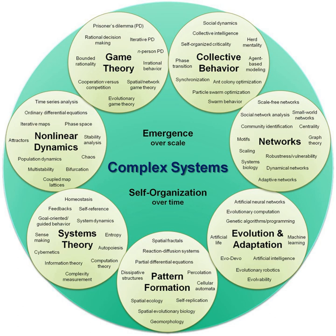Systems theory is the interdisciplinary study of systems. A system is a cohesive conglomeration of interrelated and interdependent parts that is either natural or man-made. Every system is delineated by its spatial and temporal boundaries, surrounded and influenced by its environment, described by its structure and purpose or nature and expressed in its functioning. A system can be more than the sum of its parts if it expresses synergy or emergent behavior.